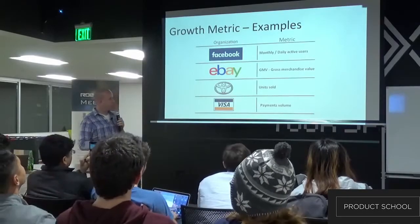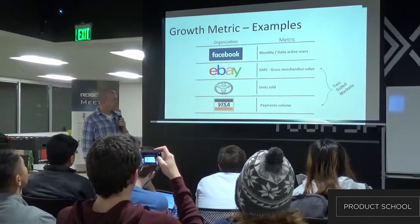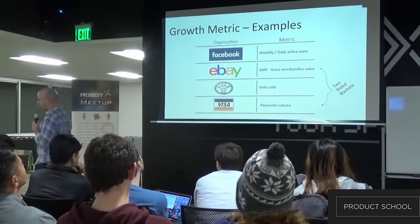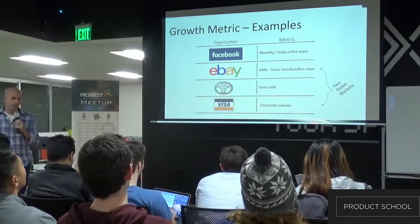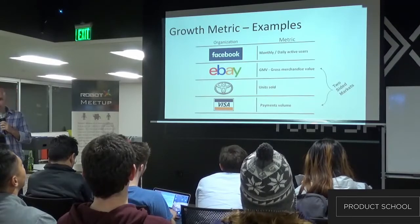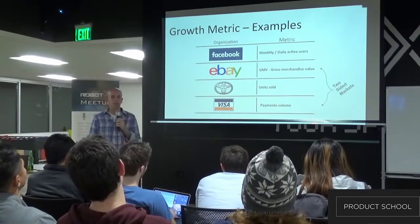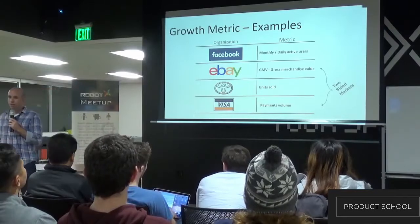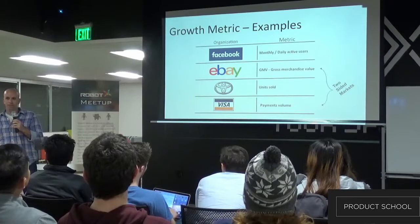In eBay and Visa, you find something very interesting — those are two-sided markets, meaning that in order for them to grow, they need two types of users. They need sellers and they need buyers in eBay, and they need cardholders and merchants in Visa. This is why their growth metric is not in terms of users, or cardholders, or buyers, because growing only buyers will not grow eBay.